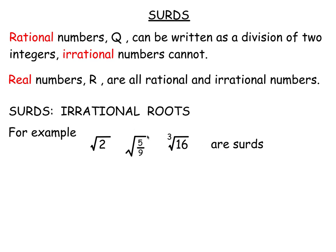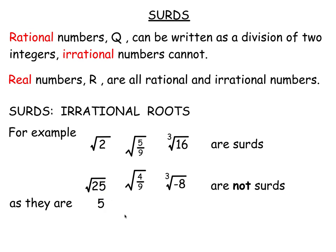Any irrational root like that is a surd. Now some roots are not surds. For example, root 25 is not a surd because it's exactly 5 — as a fraction: 5 over 1, 10 over 2, 15 over 3, etc. Root 4 ninths is exactly two thirds. Cube root negative 8 is exactly negative 2. So these roots can be written as fractions — they are rational, not surds.